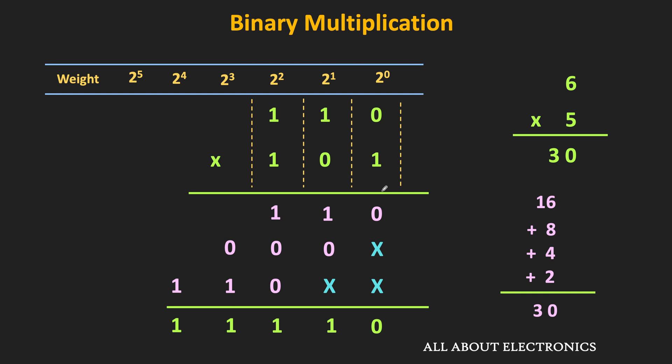So in binary multiplication, we need to follow three steps. First, we need to multiply each digit of the multiplier with the multiplicand. If the digit of the multiplier is 0, the partial product will also be equal to 0. But if the digit is equal to 1, the partial product will be same as the multiplicand — that is equal to 110. Also, while multiplying each digit, as we move from the LSB towards the MSB, each partial product is left shifted by 1 bit position. And then we just need to add them to get the final result.